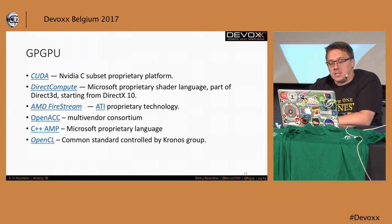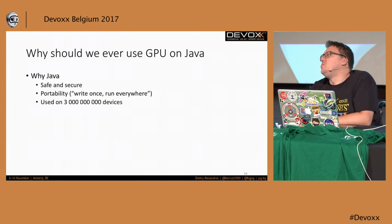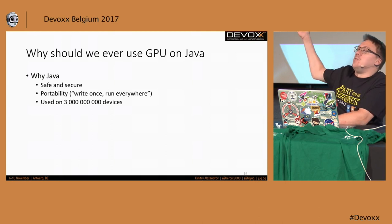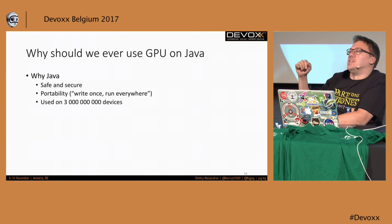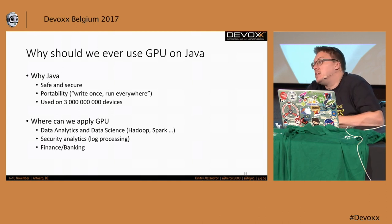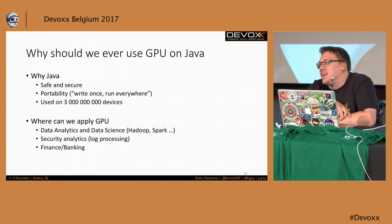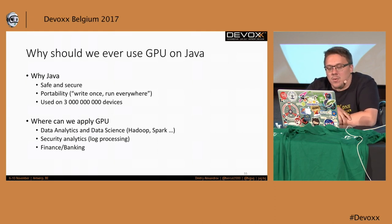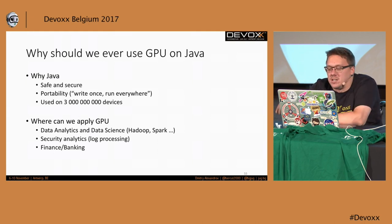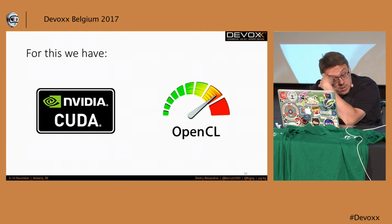Why should we ever use a GPU from Java? Well, Java is 'write once, run everywhere' and runs on three billion devices. But more importantly, a lot of data analytics and data science is done with Java, and a lot of finance and banking runs on Java. So GPU is a good choice for this. I came to this idea because I used it in some projects in finance specifically — it was quite applicable.